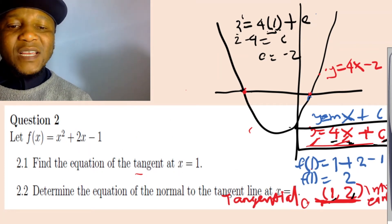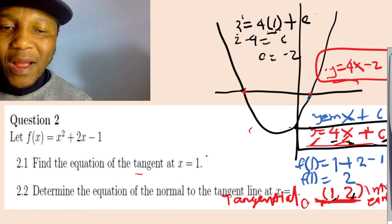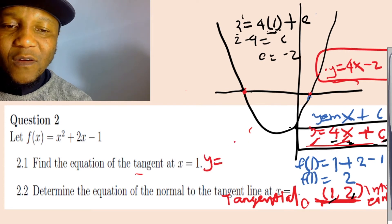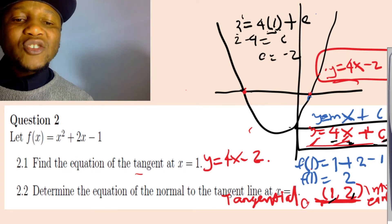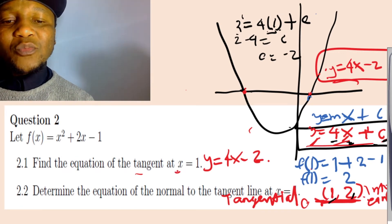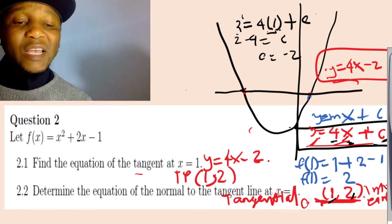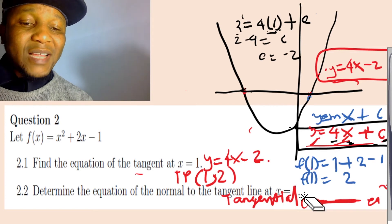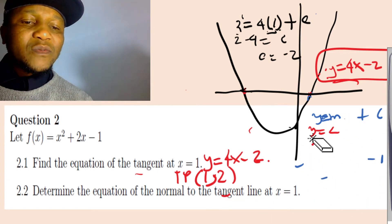So the equation of the tangent is y equals 4x minus 2, and the tangent point is (1, 2). Now let's move on to question number two.